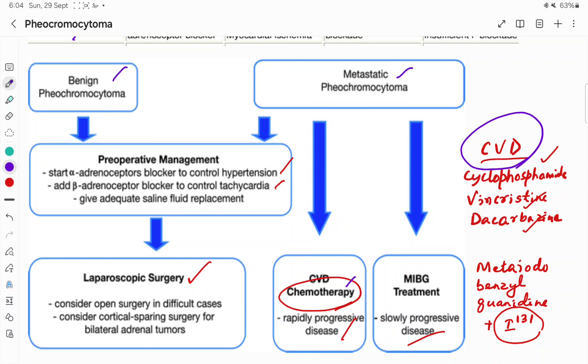If it is slowly progressive disease, then we can use MIBG treatment. MIBG stands for meta-iodo-benzyl-guanidine, where it is combined with the radioisotope of iodine, iodine-131. Radiotherapy can be used.